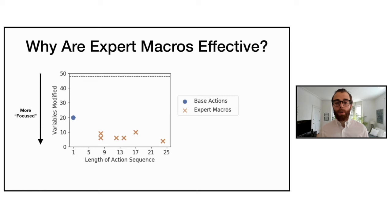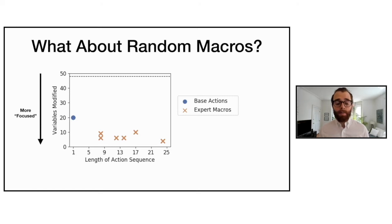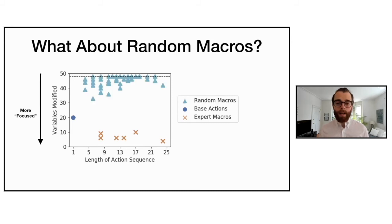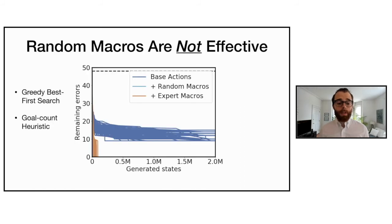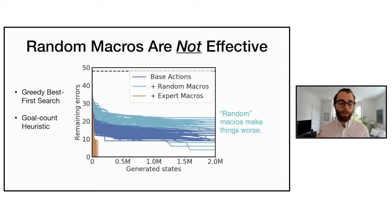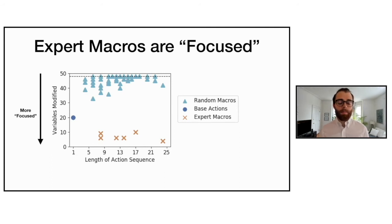Comparing random macros — arbitrary random sequences of primitive actions — to expert macros on the same plot, random macros modify very many state variables, nothing like the expert macros. Accordingly, random macros are not effective: they actually make planning worse. This aligns with the hypothesis that more focused macro actions lead to better planning performance with the goal count heuristic.